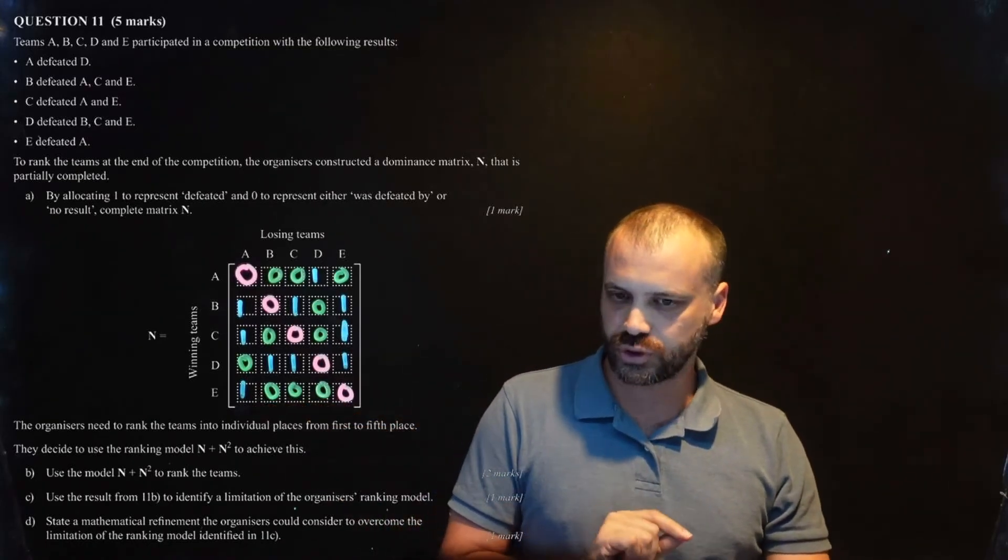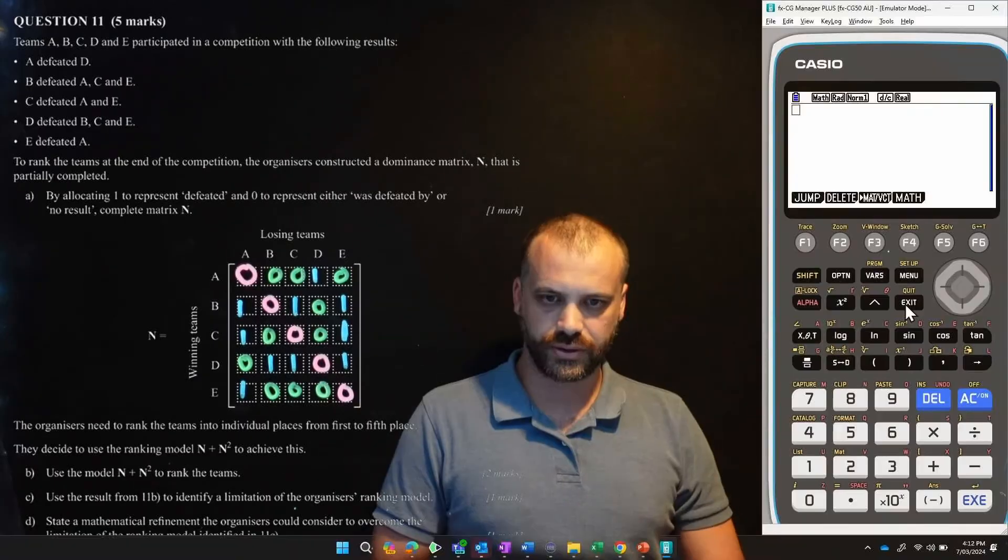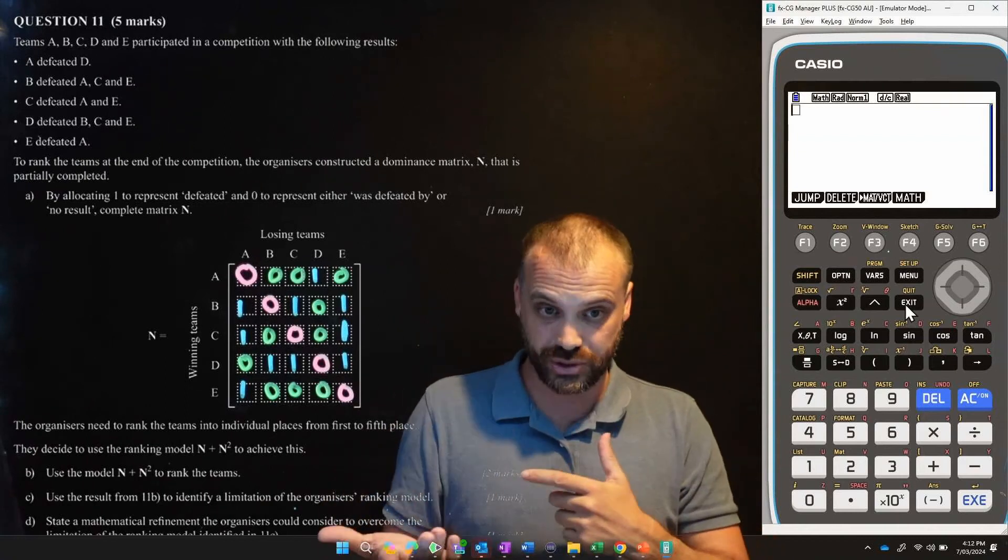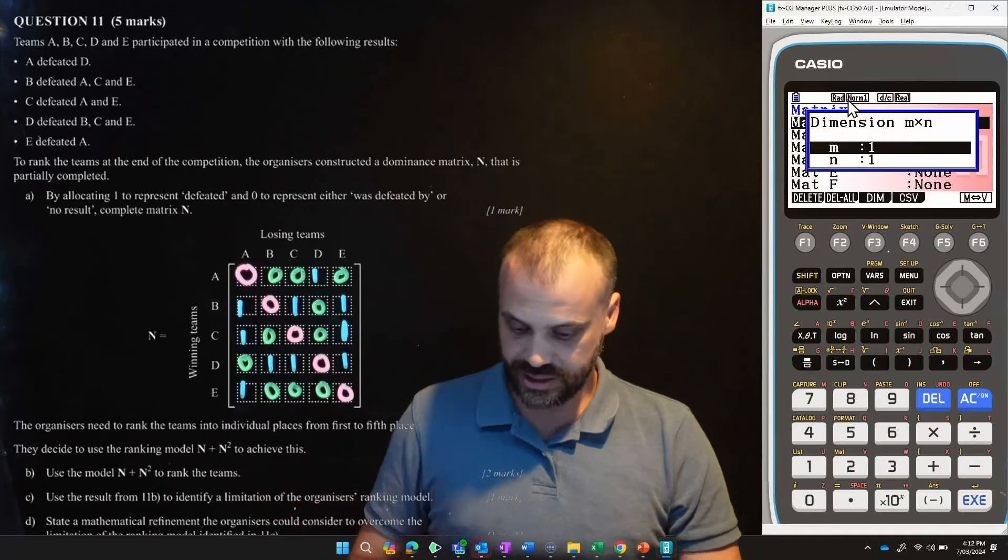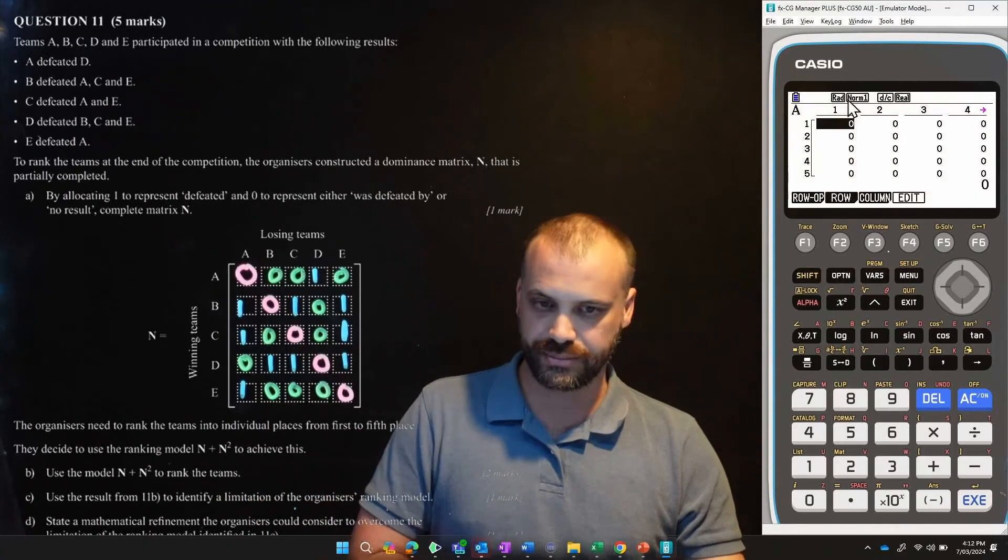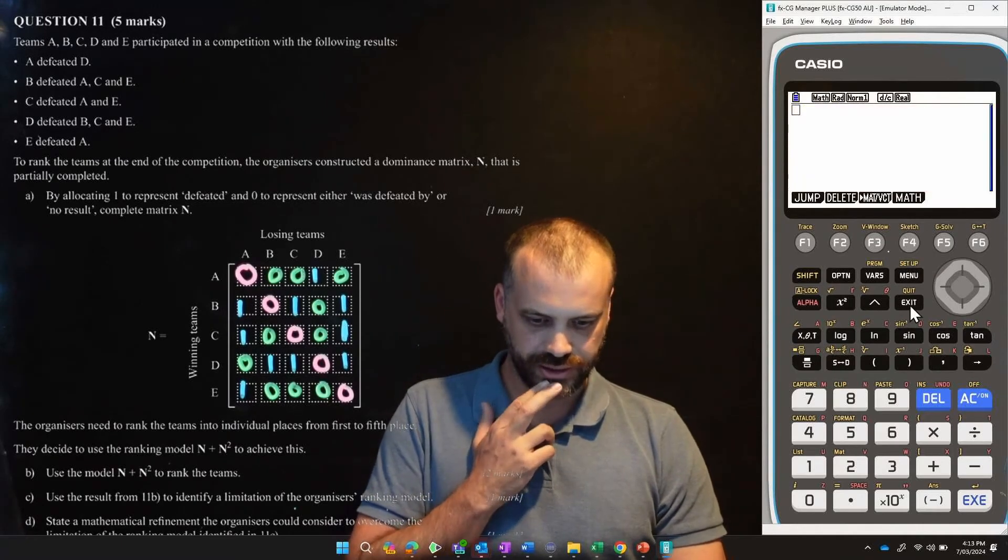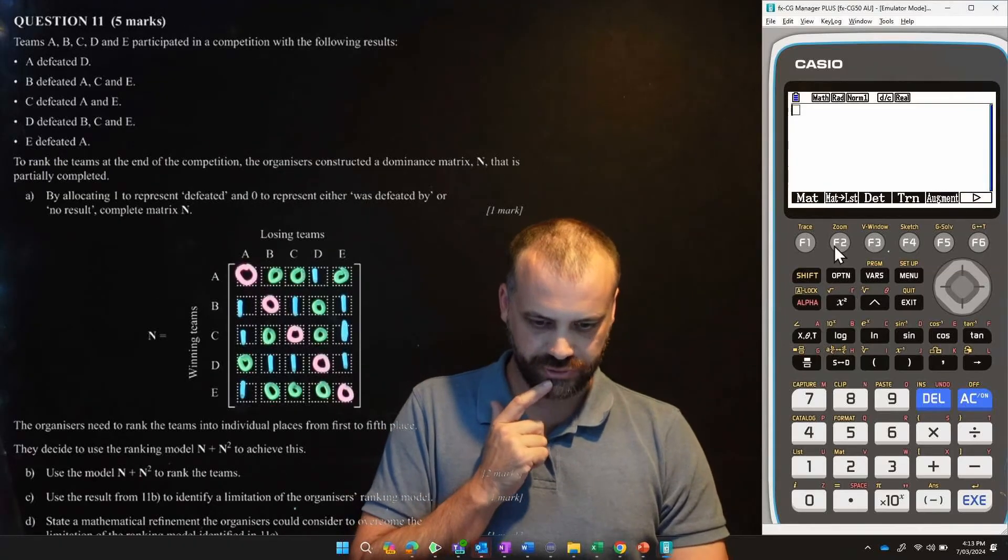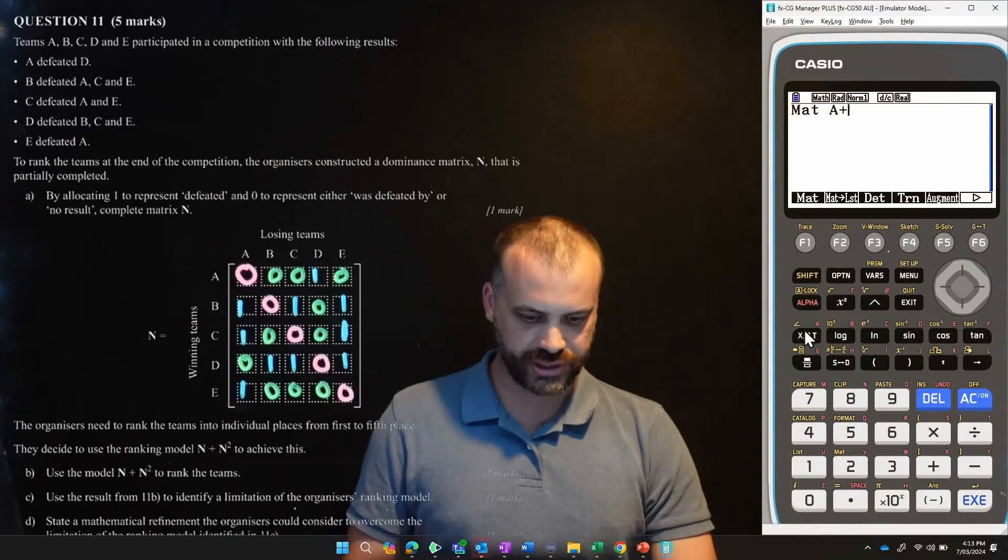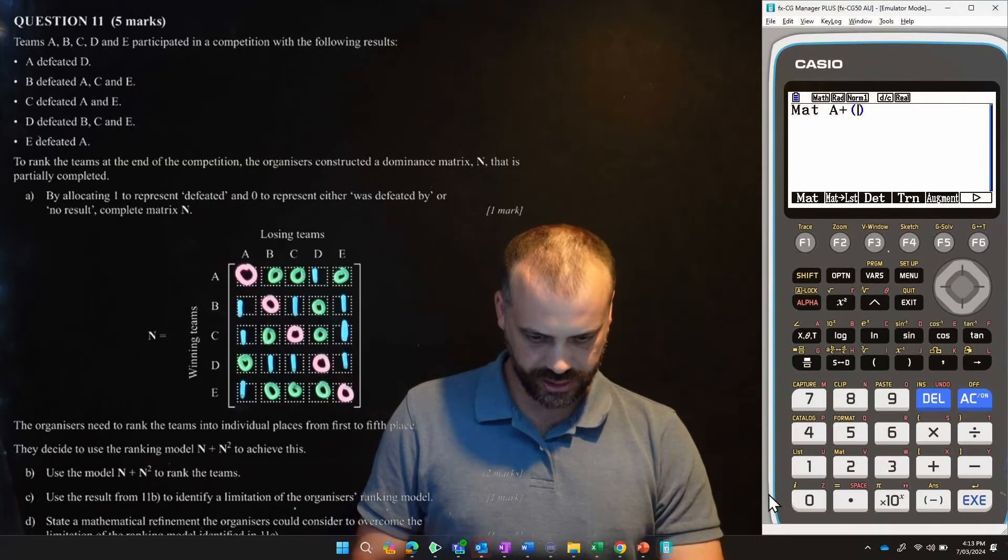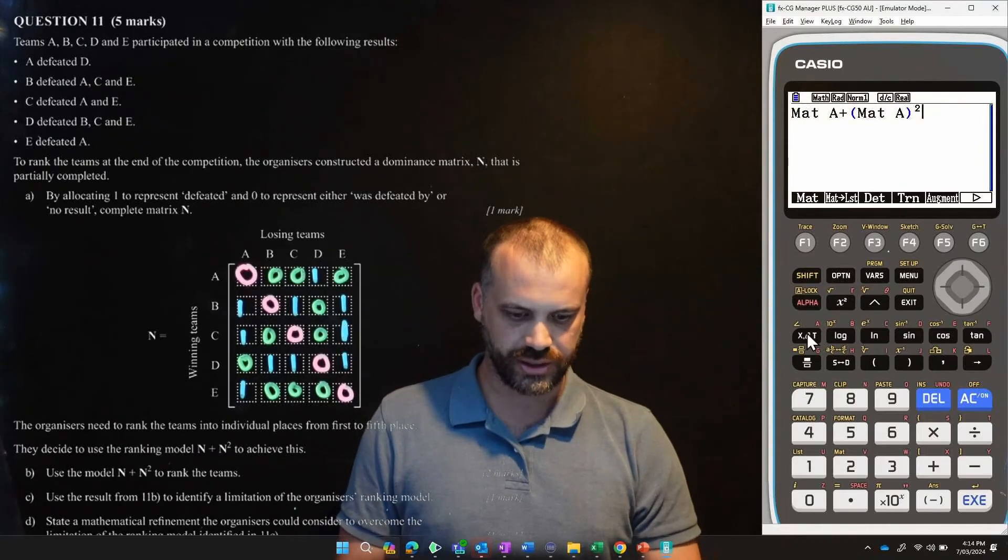Next question. The organizers need to rank the teams into individual places from first to fifth. They decide to use the ranking N plus N squared to achieve this. Use the model N plus N squared to rank the teams. Alright. So, because I'm going to have to deal with a fairly large matrix and then do it a second time and square it, I'm definitely going to enter it. Let's go back here to this one here. So, this lets me save matrices. And they're going to be five by fives. Alright. Just enter my numbers in. Okay. All entered. Execute to save it, I think. Or maybe just exit out to save it. And we've got our matrix there. Okay. Now, I'm going to exit out of that. And then I need to do some calculations. So, options is where I go. Matrices here.